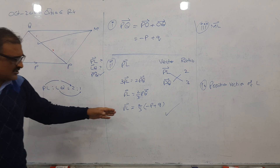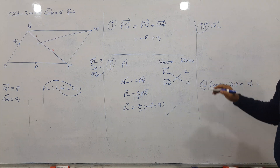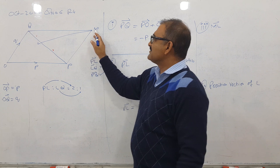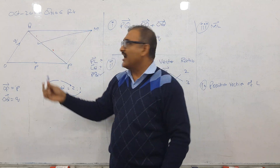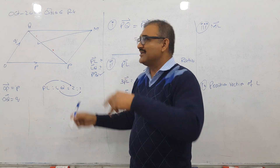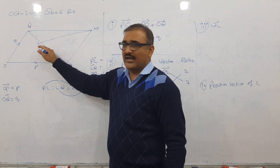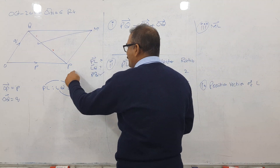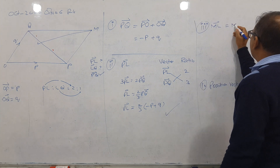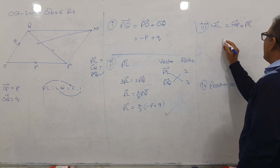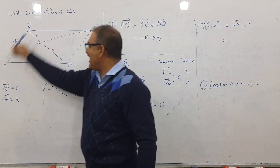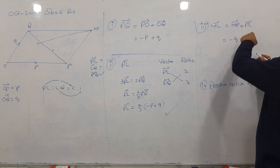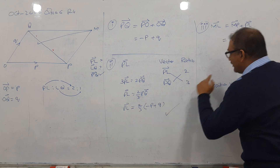Now for vector ML — M to L. I have two paths. Path one: M to Q, Q to L — but I don't have QL. Path two: M to P, P to L — and I have PL, so this path is the favorite. M to P goes backwards along Q, so it becomes minus Q. Then plus PL, which we already found.